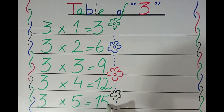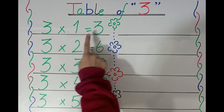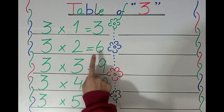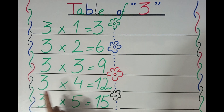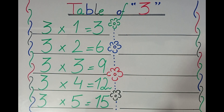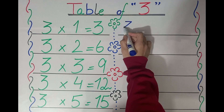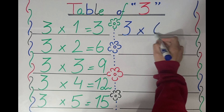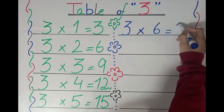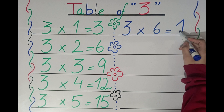Three fives are fifteen. Three ones are three, three twos are six, three threes are nine, three fours are twelve, three fives are fifteen, three sixes are eighteen.